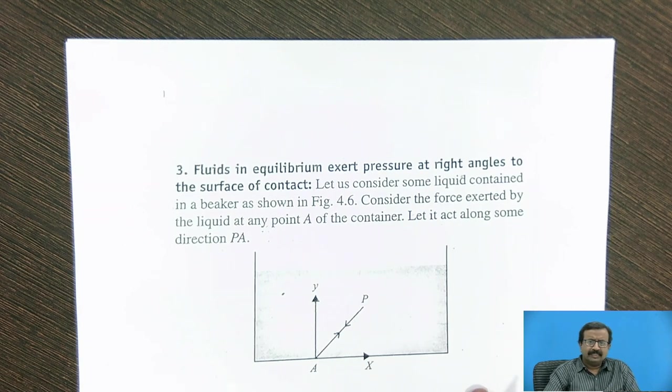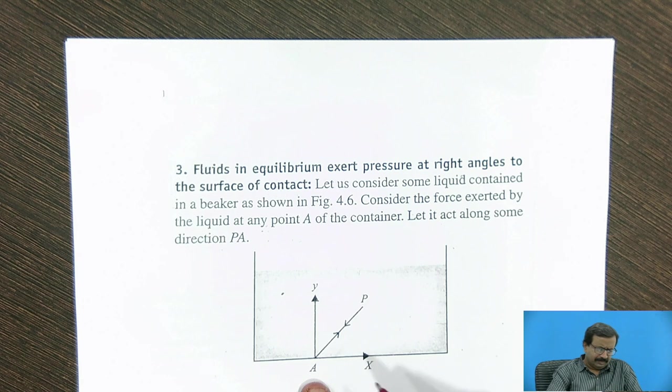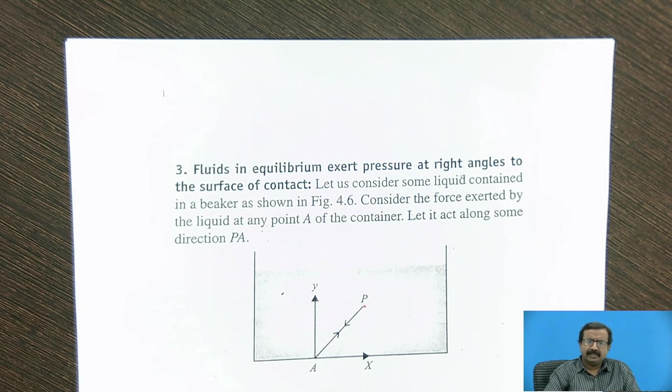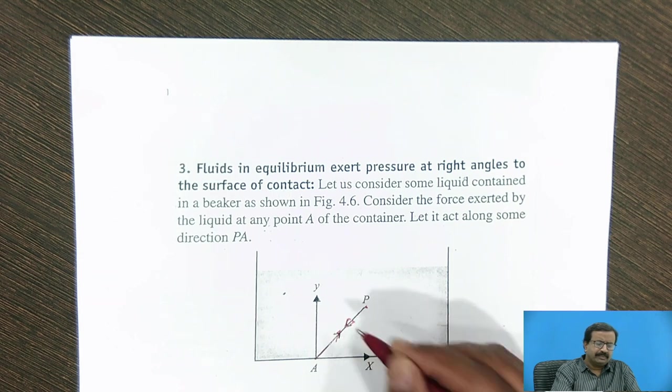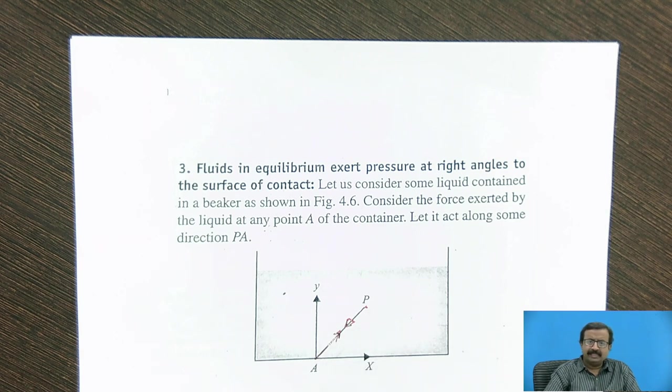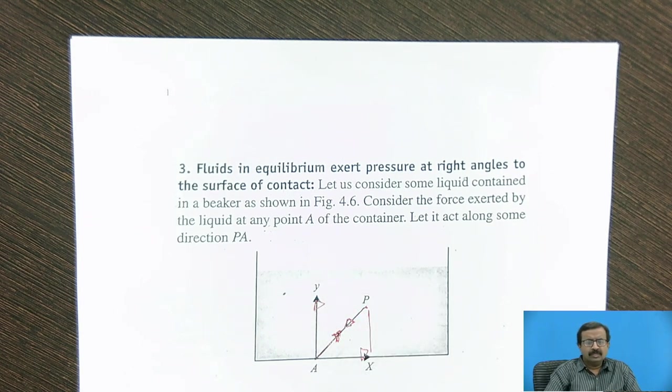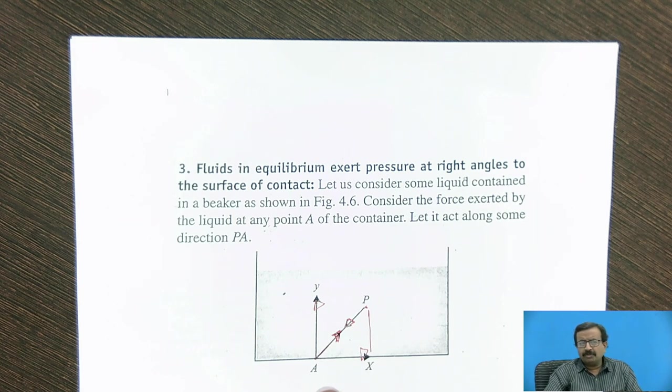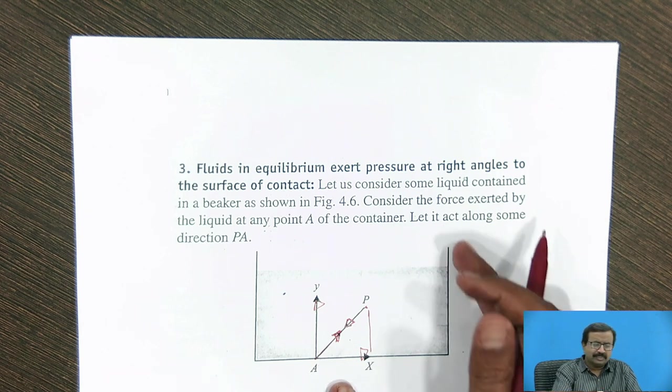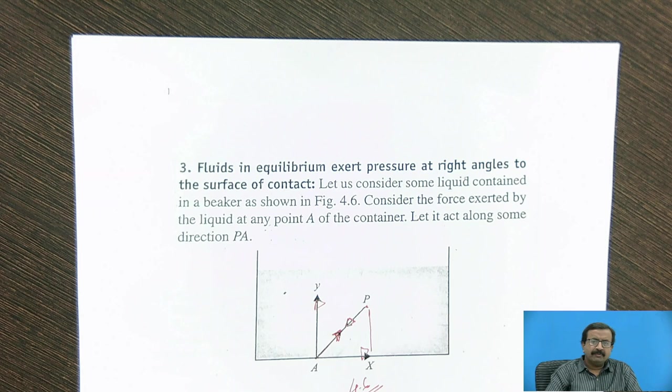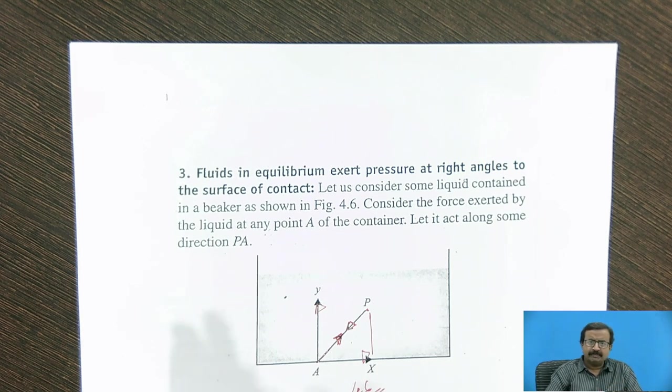Now suppose this is a container. In the container there is liquid, and assume that the p to a is the force exerted, direction is p a exerted. Now by Newton's third law, there is an immediate reaction along the same direction. So the force exerted will be along this direction, if I assume the force exerted by the liquid in this direction, because these are equal and opposite forces. If this is the case, I will have a net resultant force in this direction, which will have a component along this direction and along this direction. So the x-component will move the liquid in the horizontal direction. When the x-component moves the liquid in the horizontal direction, there is no scope for the liquid to move, because it is contained here, and we have restricted its motion. So it is clear that whenever we have the fluid in equilibrium, it always exerts pressure at right angles.